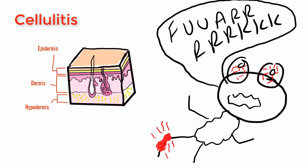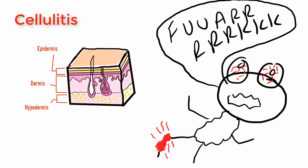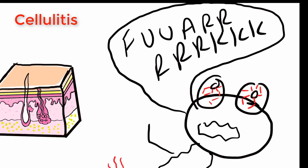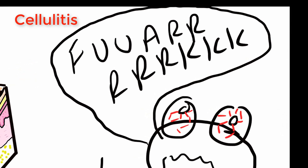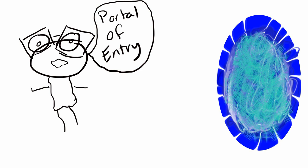Starting with the dermis, you have cellulitis, which affects the dermis layer and the subcutaneous fat. The area affected is usually going to be pretty red, warm, and most of the time pretty painful. Unless of course they're diabetic, then they may not feel any pain because of their neuropathy. This requires a portal of entry, meaning you need a break of the skin.